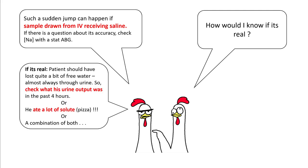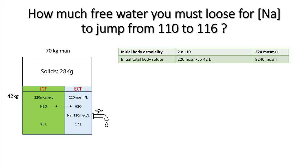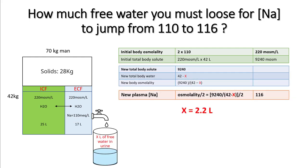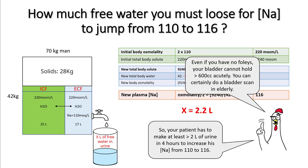It takes quite a bit of solute and water to change sodium by such a large degree. If the readings are real, the patient should have either lost quite a bit of free water — almost always through urine — so make sure you check urine output in the last four hours, or the patient ate a lot of solute, or a combination of both. Let's figure out how much free water must be lost for sodium to jump from 110 to 116. Using our previous calculations, you need around 2.2 liters to make this change.